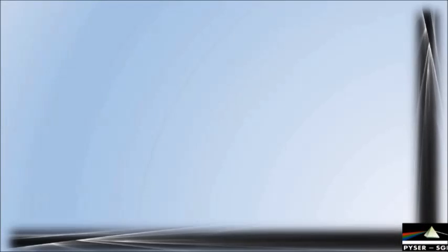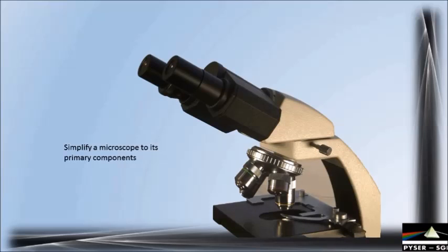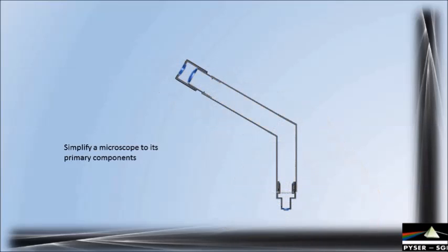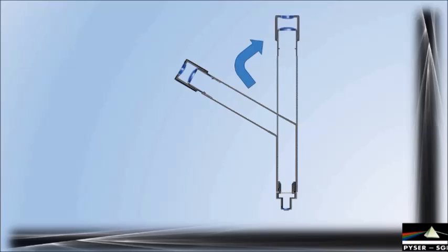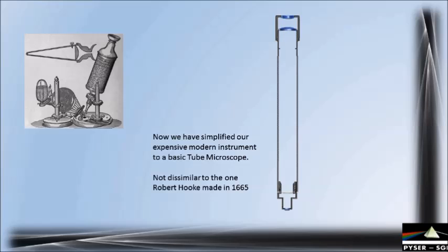But first let's take a closer look at our microscope measurement instrument. For the sake of explanation let us simplify this microscope to its primary components. Here we can see a representation of one optical path from the subject stage to the eyepiece. In the microscope head assembly there is a prism arrangement to angle the light path into the eyepieces. If we remove this prism and straighten out the tube we have reduced the microscope to its simplest form — a straight tube with objective lens at one end and eyepiece at the other — in principle just like Robert Hooke's 17th century instrument.